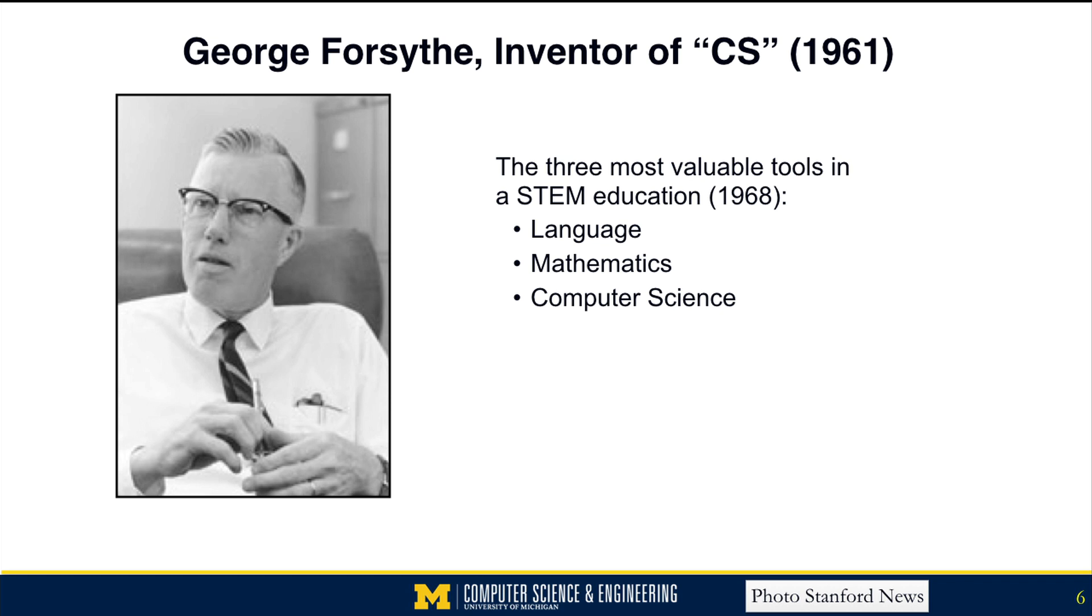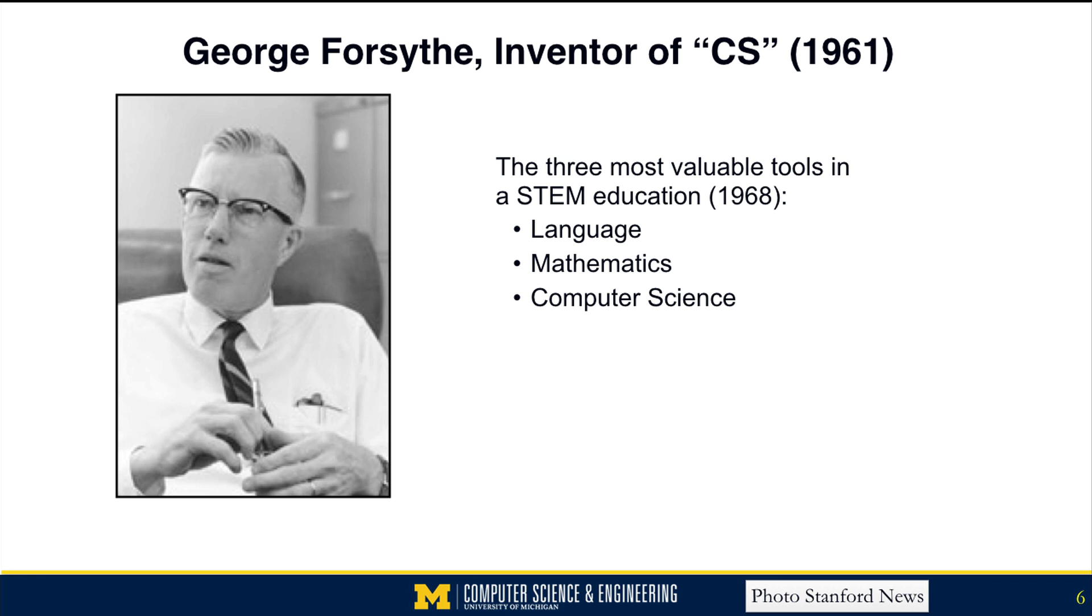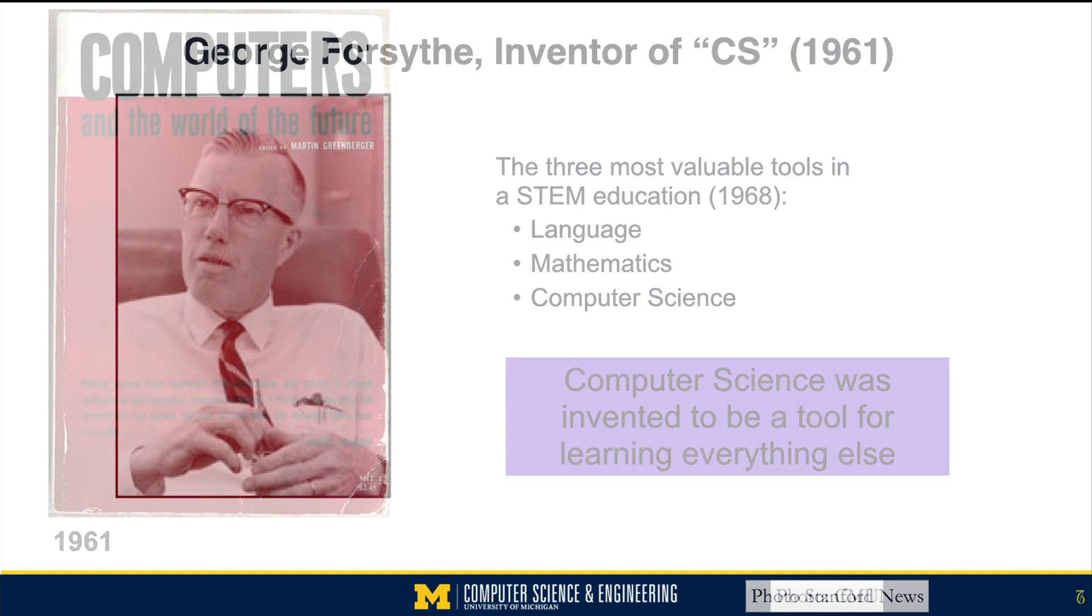Forsyth invented computer science, or at least the term, because he saw it as one of the most valuable tools in a STEM education. In 1968, he wrote about the powerful mental tools that we might teach students: the most powerful of these is natural language and then mathematics. But then a new important skill was computer science. It was a way of thinking, invented to be a tool for learning everything else.